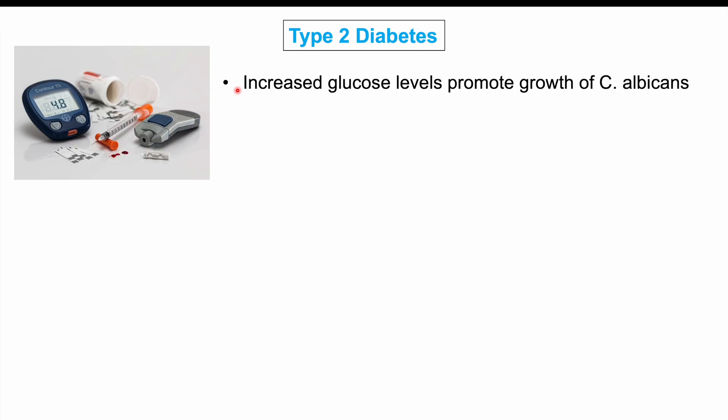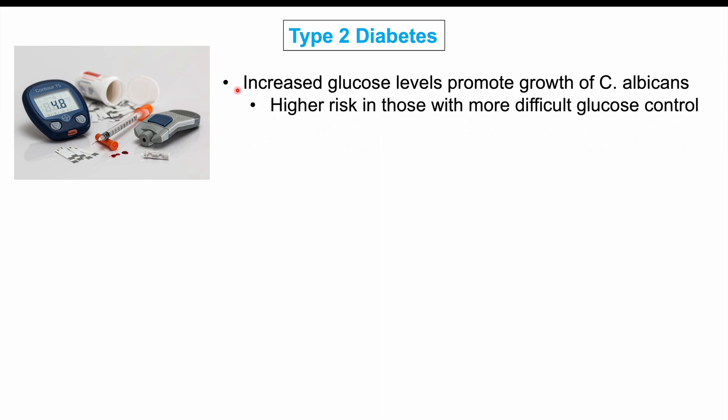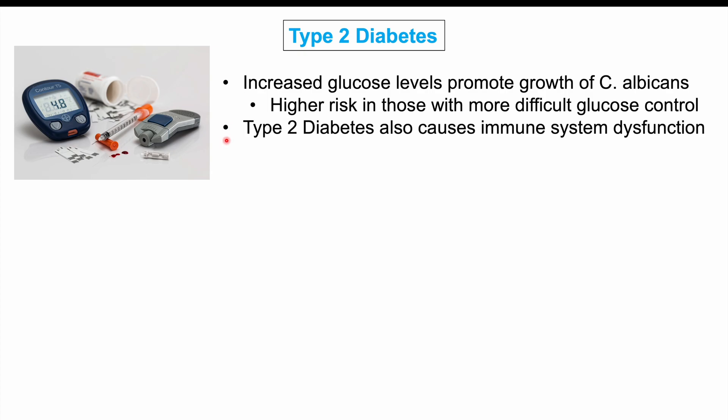Another risk factor is type 2 diabetes. Type 2 diabetes can lead to high levels of glucose, which can promote growth of candida albicans. If we have high levels of glucose in our blood, it can lead to high glucose levels in our tissues, including the vaginal cavity, and the candida yeast can use that glucose as an energy source to grow and proliferate. This is particularly important in patients with severe type 2 diabetes or poor glucose control. Additionally, type 2 diabetes can cause immune system dysfunction, which can also increase the risk of infections including yeast infections.